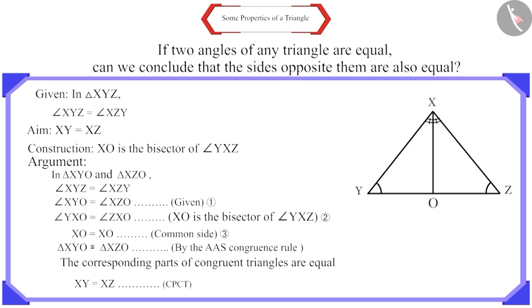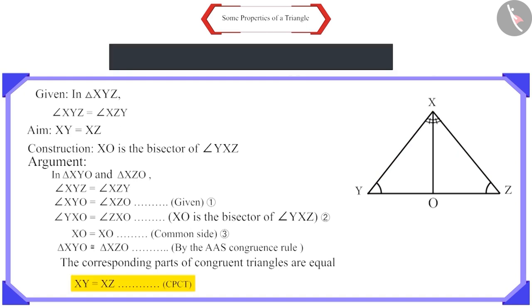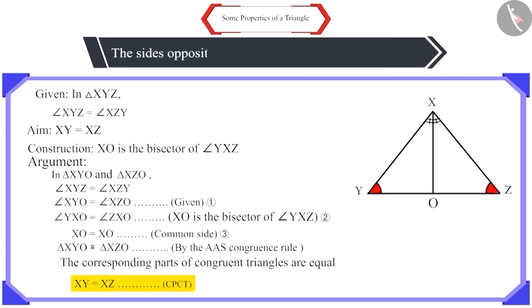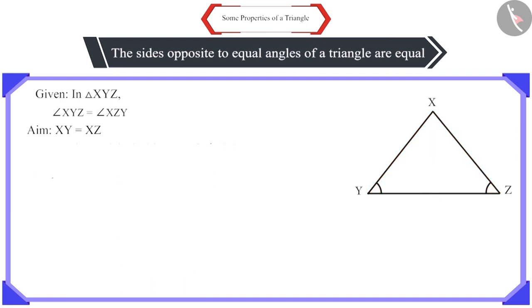Therefore, we can say that the converse of the theorem is also true. That is, the sides opposite to the equal angles of a triangle are equal. You can also try to prove it by any other method.